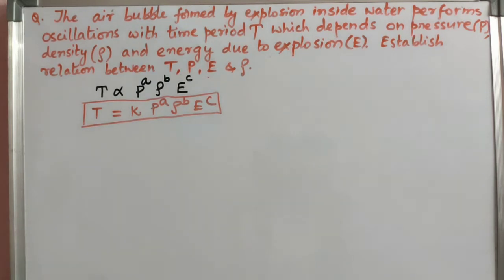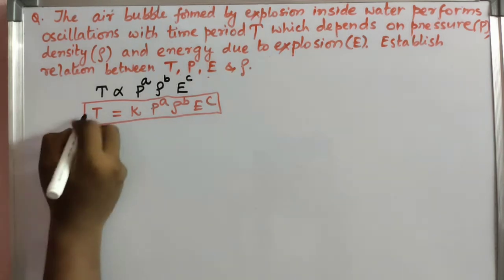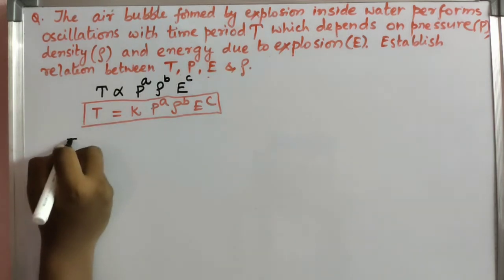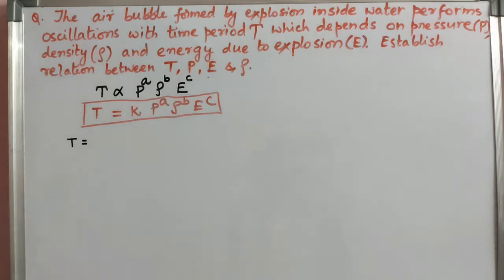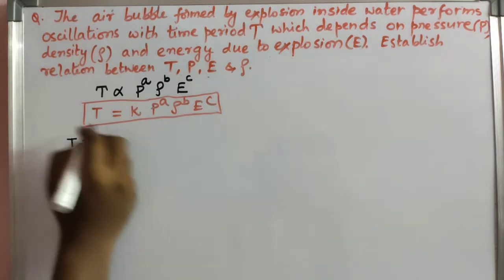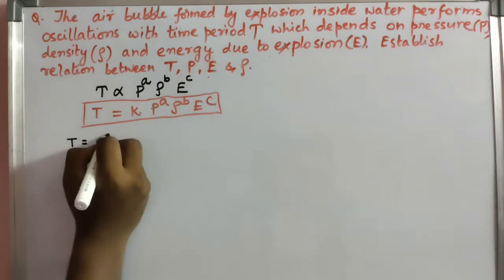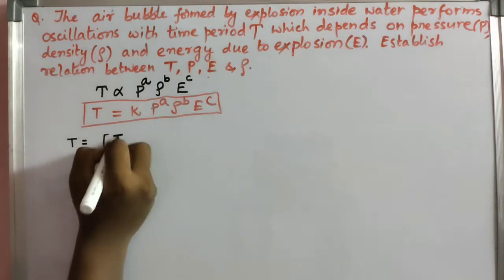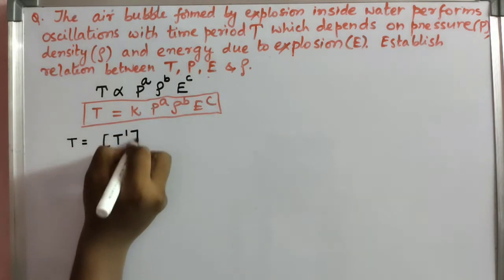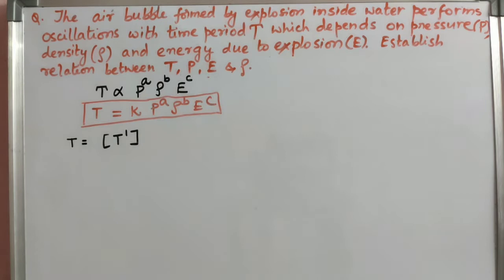Let's write the dimensional formula for different physical quantities. Number one: time period. Time period itself is a base quantity, so its dimensional formula is T power 1.